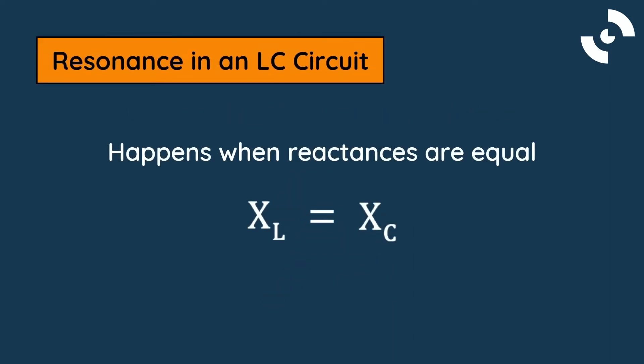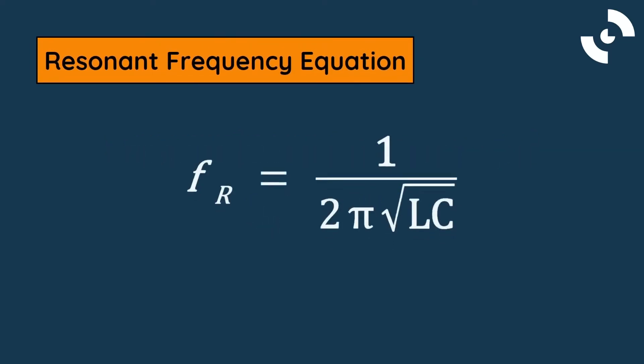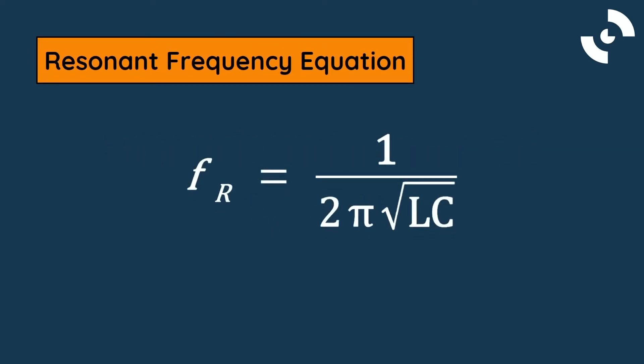Resonance, or ringing, in an LC circuit happens when our reactances are equal. Rearranging this formula gives us the LC circuit equation for resonant frequency. If any two values in this equation are known, a third can be calculated.